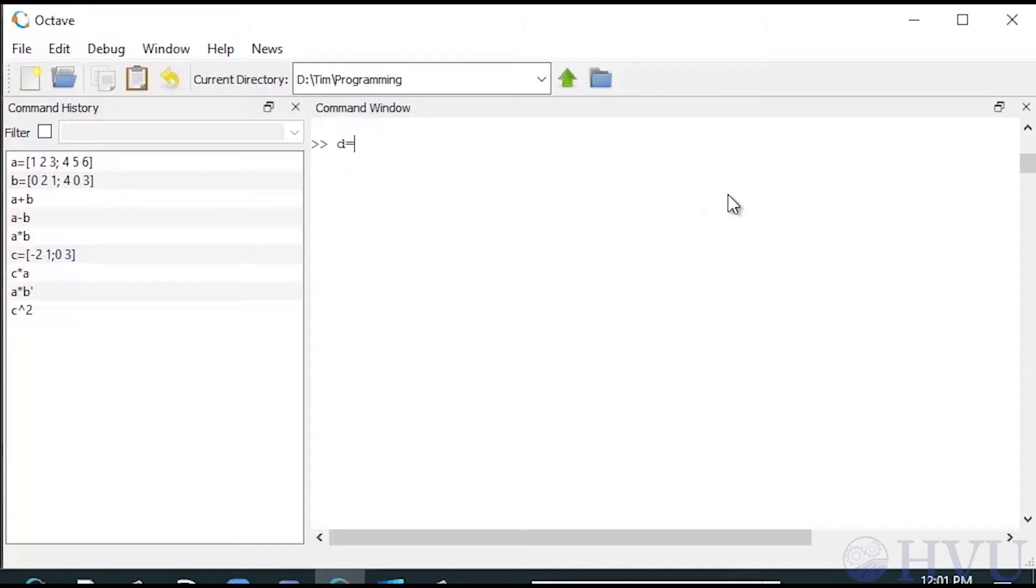Finally, I'll transpose a matrix D, which has complex values. I'll set D equals 1 plus j, j, 1 minus j, semicolon, 2, 3, and 1 plus 2 times j.